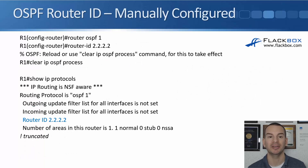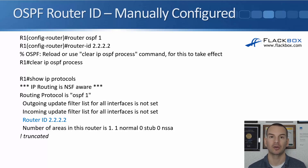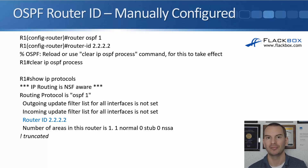If you want to manually configure the router ID, the command is under the router OSPF configuration: router-id, followed by the ID you want to use in the format of an IPv4 address. The address you use doesn't have to actually be configured on the router — you could make up a new address. However, it's more logical and easier for troubleshooting if you use an IP address that is actually configured on the router.